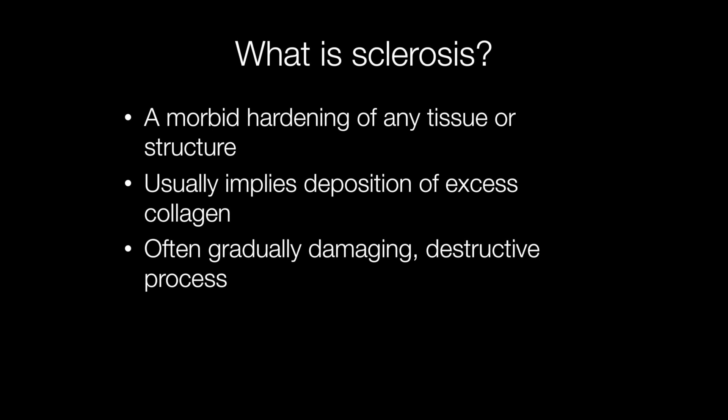The term sclerosis is frequently used in pathology. It is a morbid hardening of any tissue or structure. In fact, it isn't confined to animals — it can also be used to describe changes in plants. When applied to human pathology, sclerosis usually implies deposition of excess collagen, and this produces the hardening of the tissues.